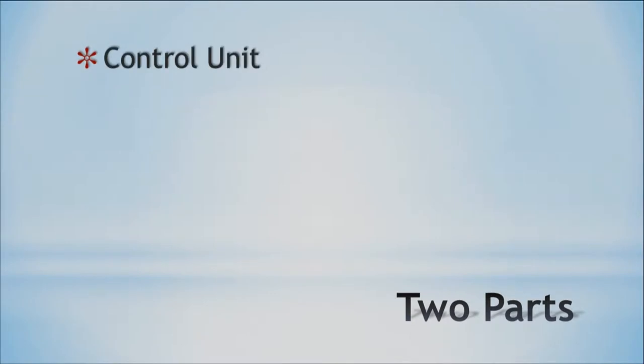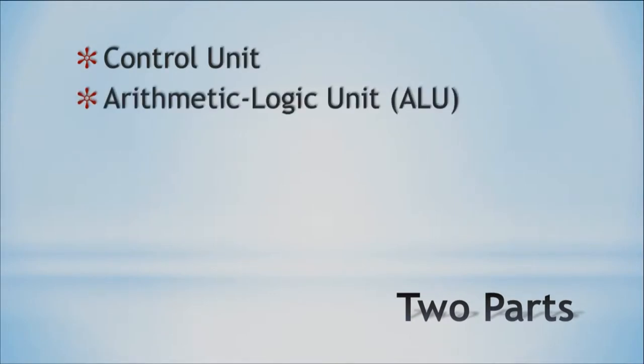The CPU is actually made up of two parts. Even though it's housed on one chip, there are two parts to the CPU, and you don't really see them separately when you look at a CPU. The two parts are the control unit and the ALU — the arithmetic logic unit — and these do have unique functionality.